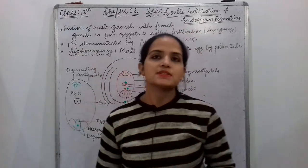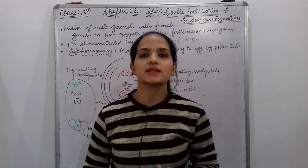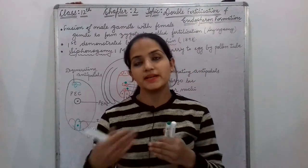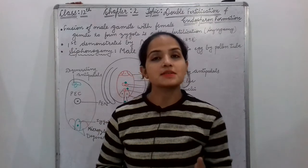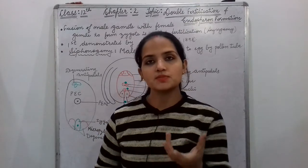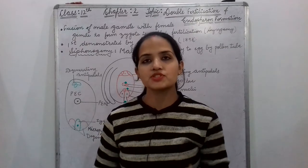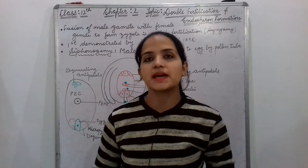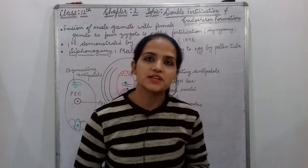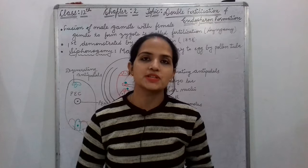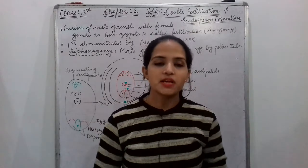As we discussed in our previous class about the pollen-pistil interaction, how pollen interacts with and communicates with the pistil. Yesterday we discussed that the pollen tube comes to the pistil through the micropylar end, carrying male gametes. Today we are going to discuss double fertilization — how fertilization takes place in plants and why we call it double fertilization.